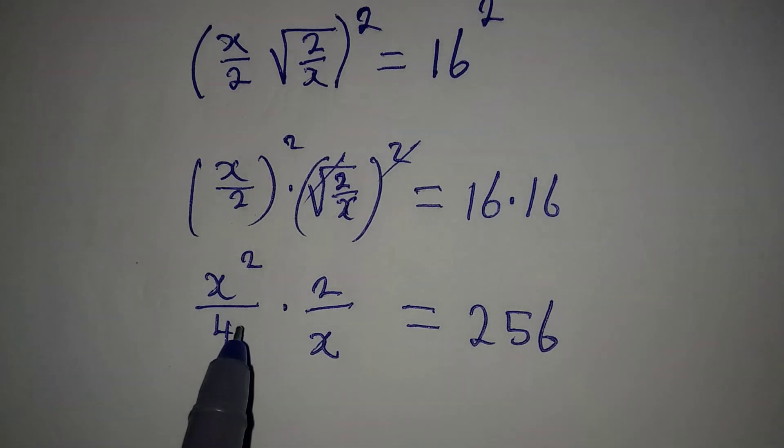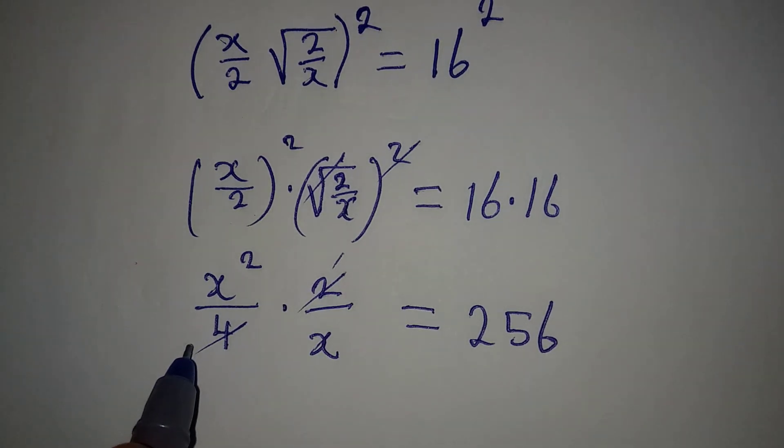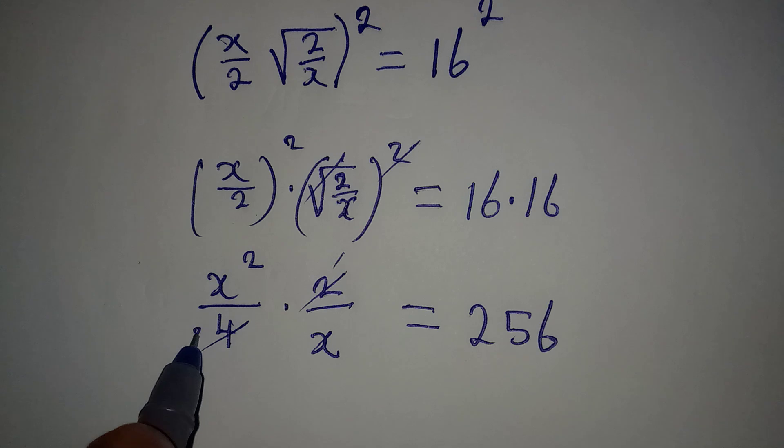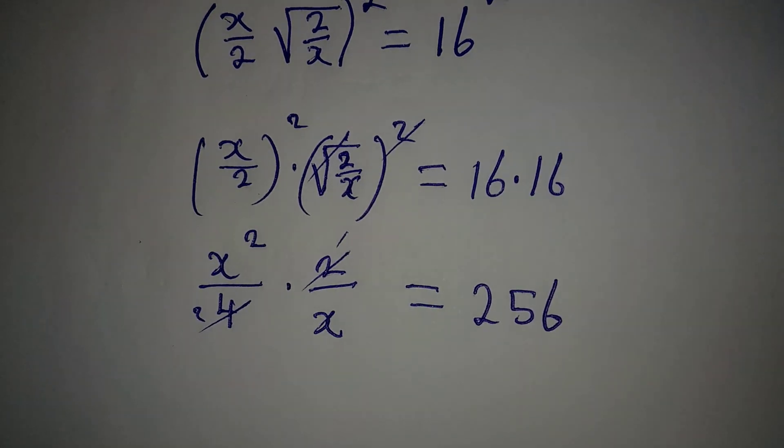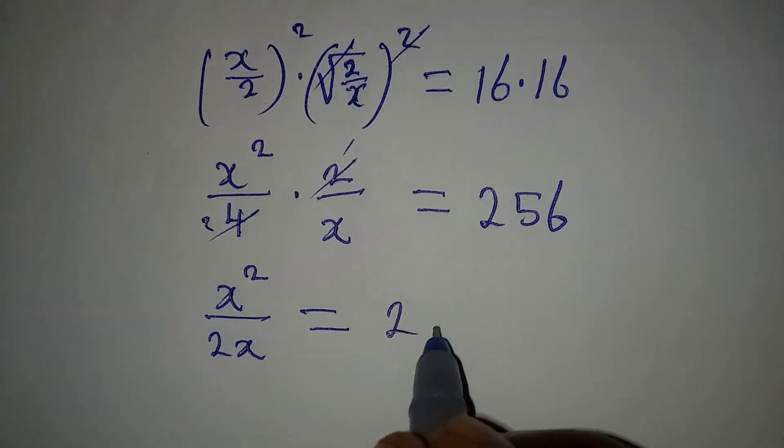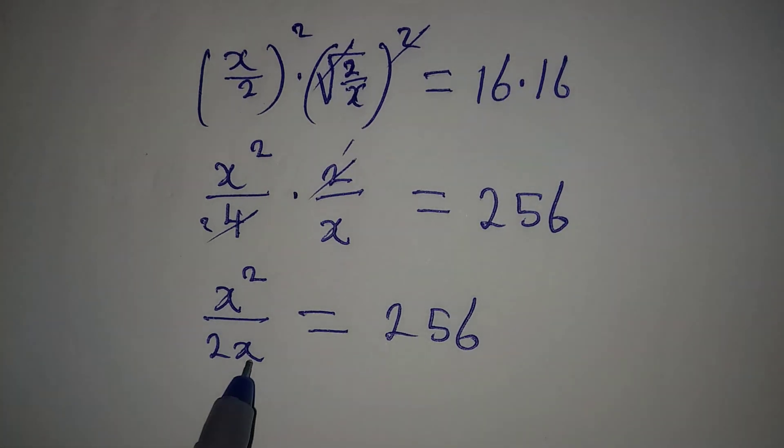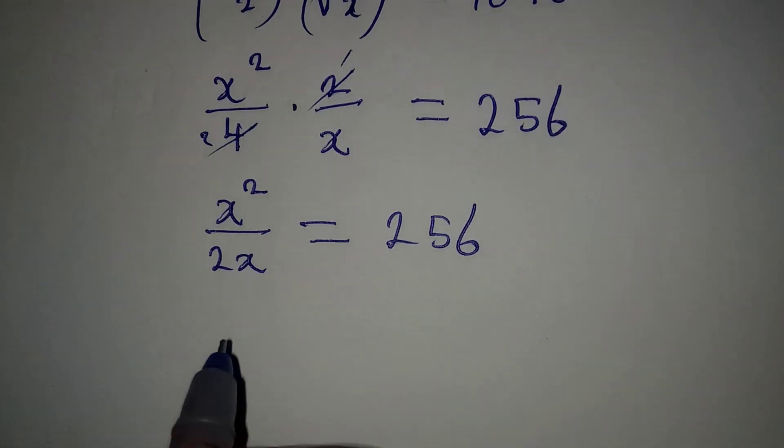From here now, what can we do? 2 will go there, 1, 2 will go here, and we shall have 4 times 2. So this means that we are going to have x squared over 2x to be equal to 256.